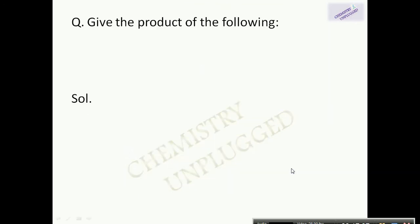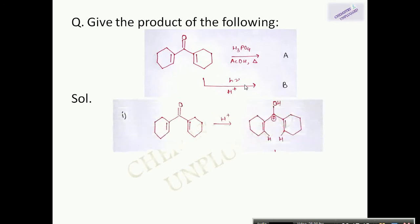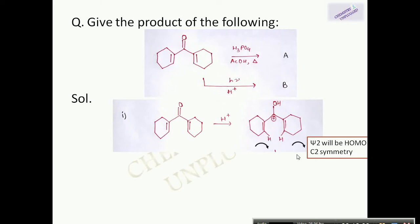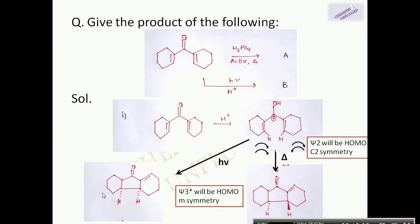For example, give the product of the following reaction — one thermally induced and one photochemically induced. The system has a 4 pi electron system. For the thermally induced reaction, psi 2 is the HOMO with C2 symmetry, meaning conrotatory movement, giving one product. For the photochemically induced reaction, psi 3 is the HOMO with mirror symmetry, so disrotatory movement gives the other product.